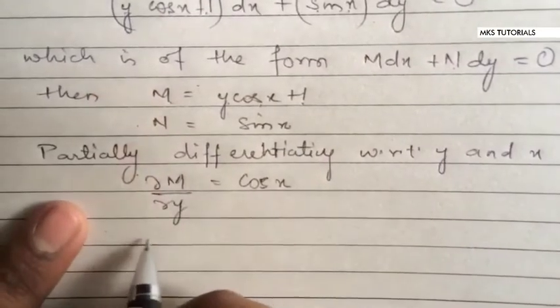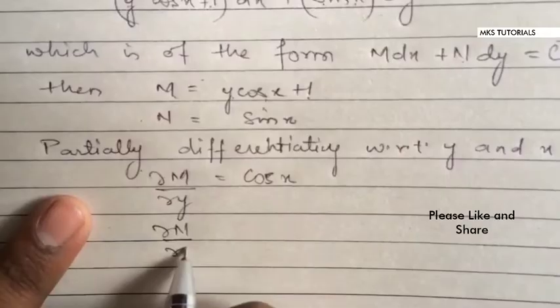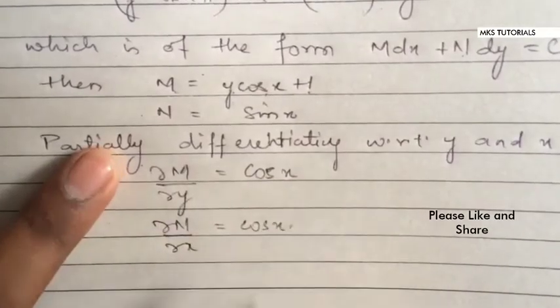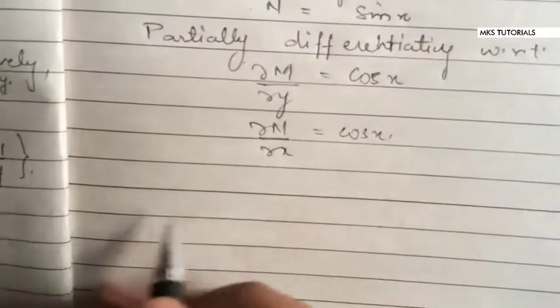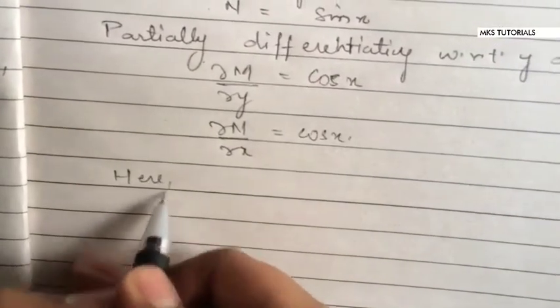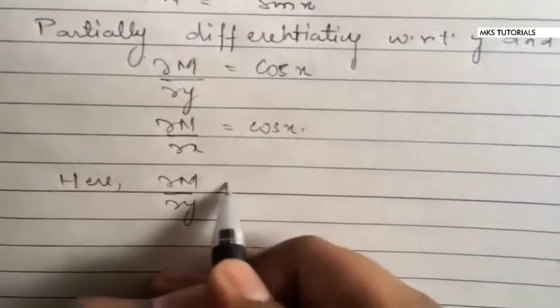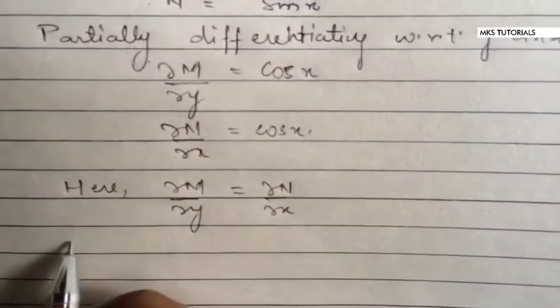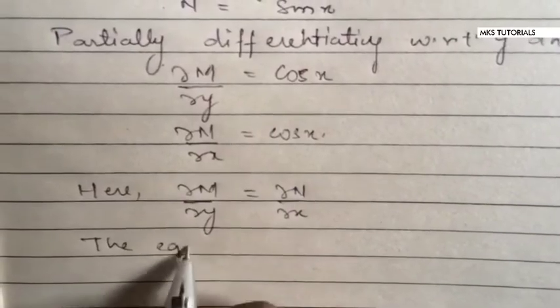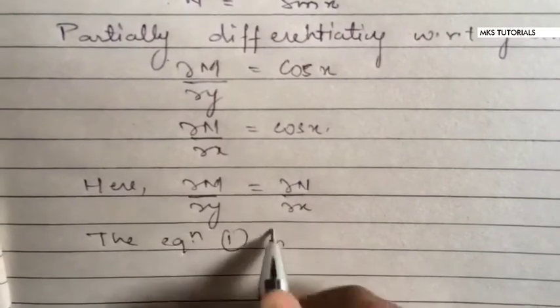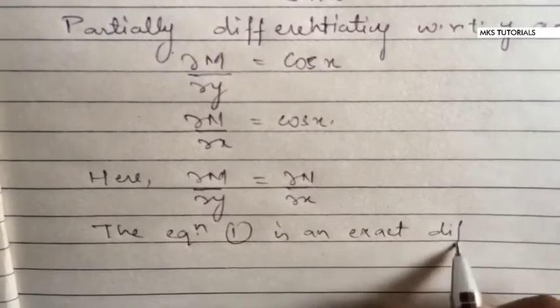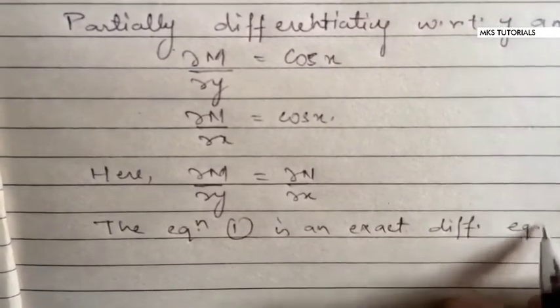Now here, del M upon del y equals del N upon del x, so equation 1 is an exact differential equation. So the solution is...